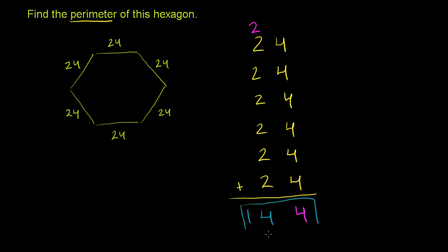That is the perimeter. And when we learn multiplication, if you haven't learned it already, you could have done this simpler. You say you have six 24s. So this would actually be a multiplication problem of 6 times 24. If you don't know how to do that just yet, don't worry about it. You can just add them all up. You get 144.